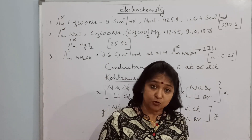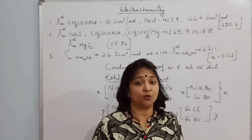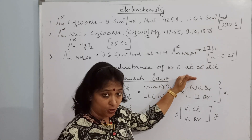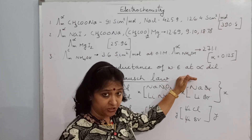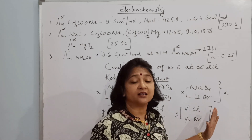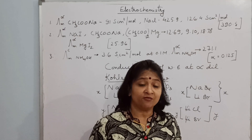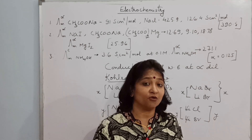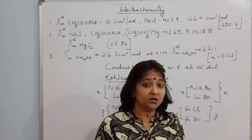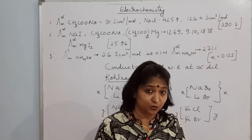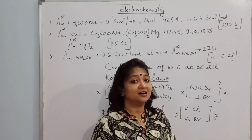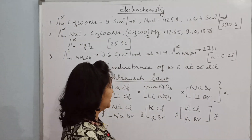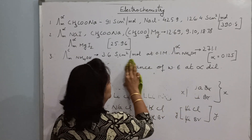The cation also has a contribution towards conductance, and the anion also has a contribution towards conductance. This is what Kohlrausch stated: according to Kohlrausch's Law, for weak electrolytes at infinite dilution, every ion contributes towards the conductance of the solution, whether it is a cation or an anion. Both have their contribution in the conductance of that solution.